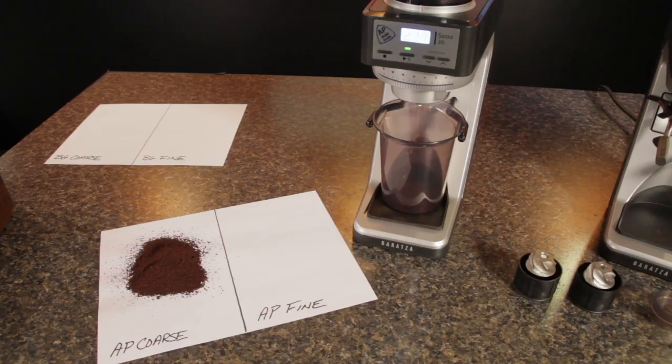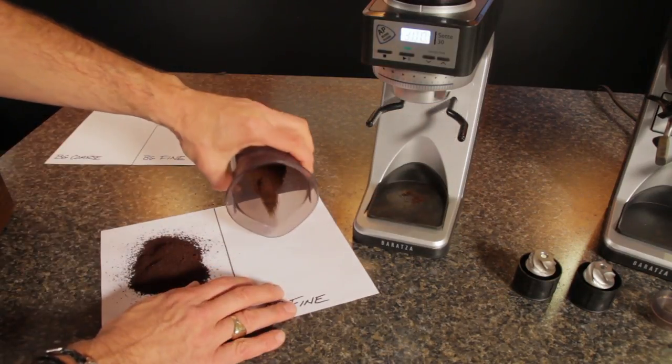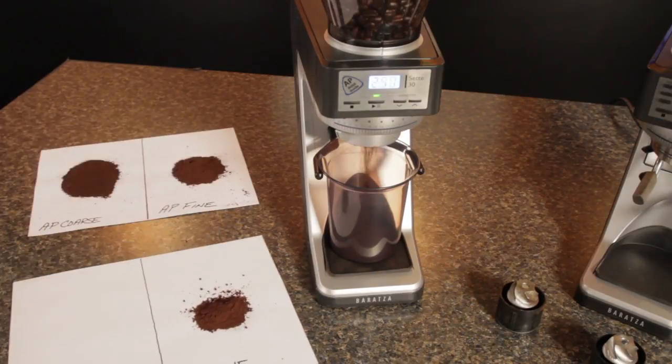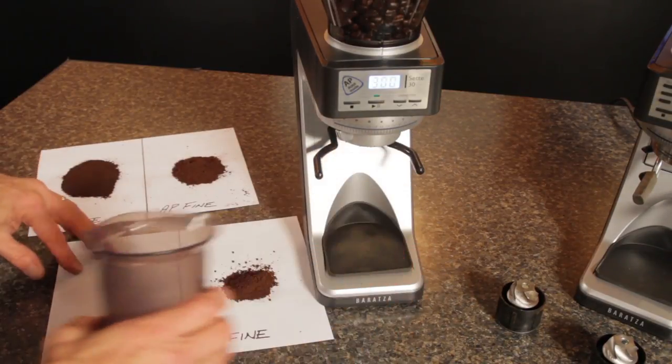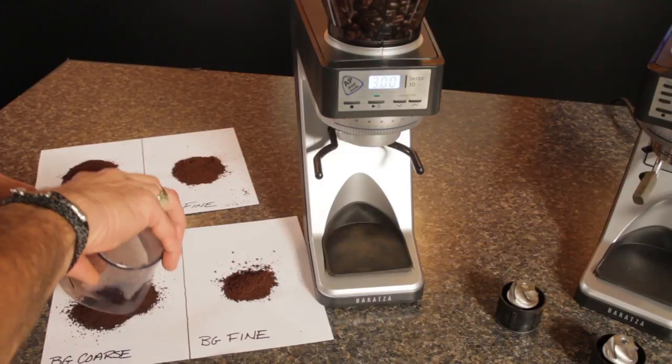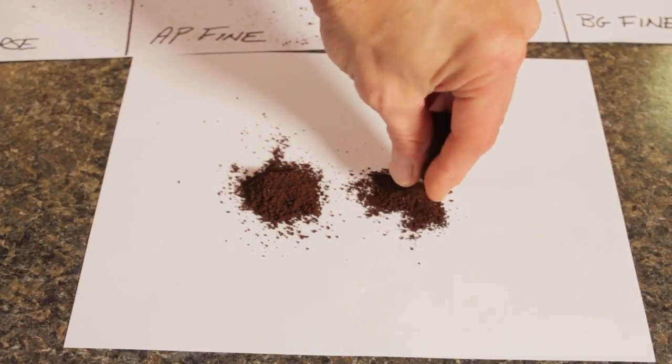Now, to check grind quality, I ground with both burr types at their finest and coarsest settings. It's always a little tricky to quantify grind quality, but here's a look at the results from both burrs at their coarsest setting.